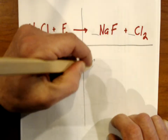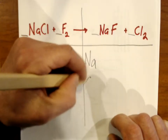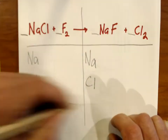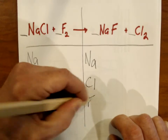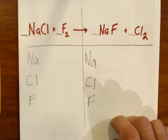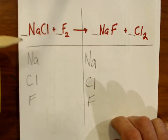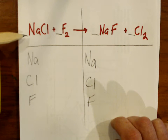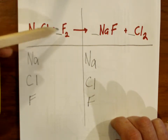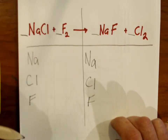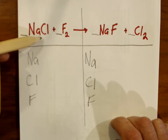So I'm going to write Na, Cl, and F on the product side as well. Now we're all set up. Now what I'll do is actually take the inventory — I'll ask myself how many atoms of each of these elements appear and list it right next to those symbols.